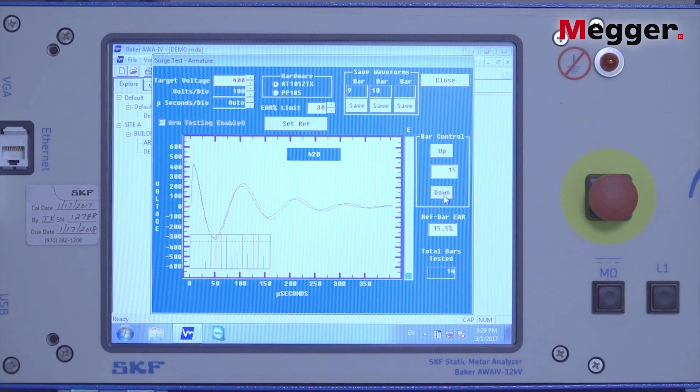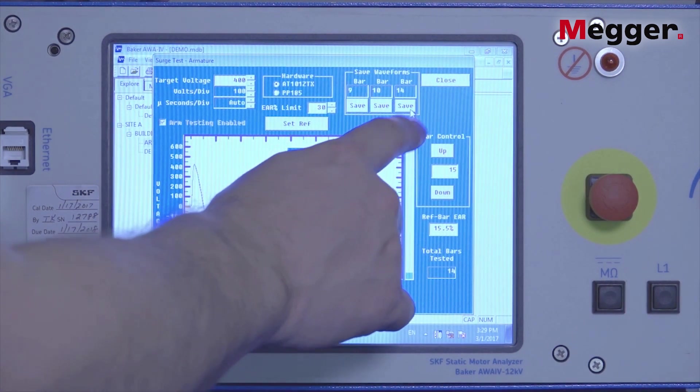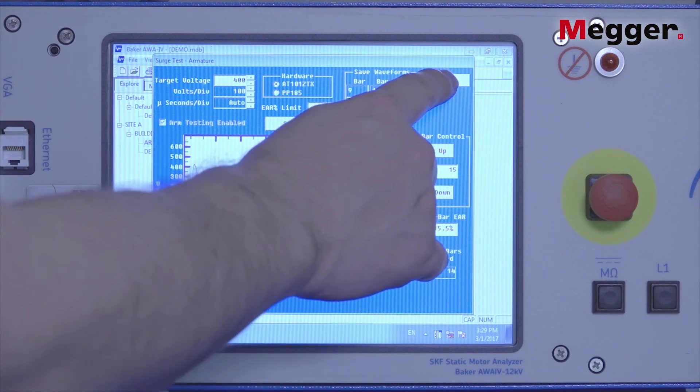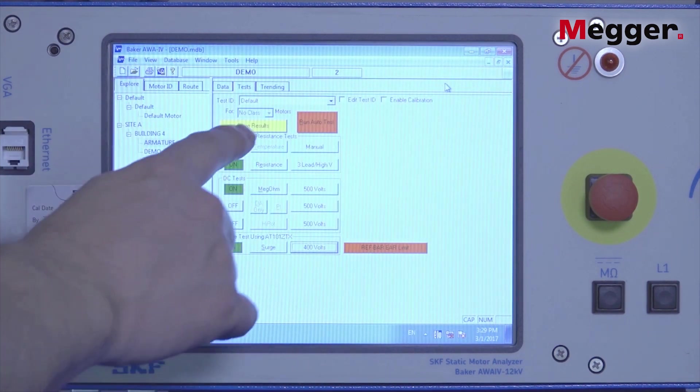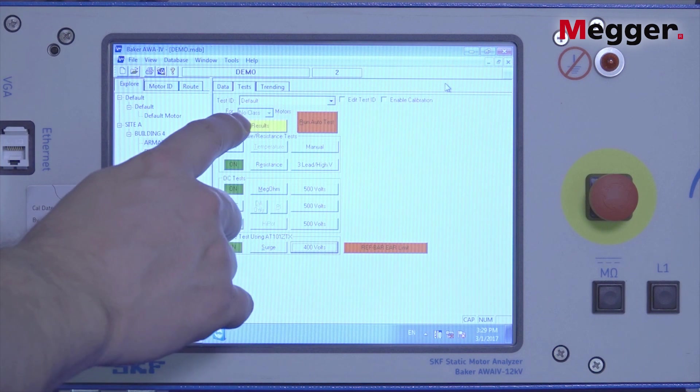Save it. Do the final save, the last bar there. Close the tester screen and then hit the save results.